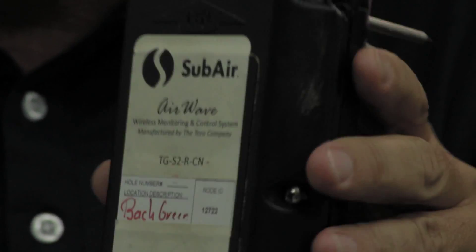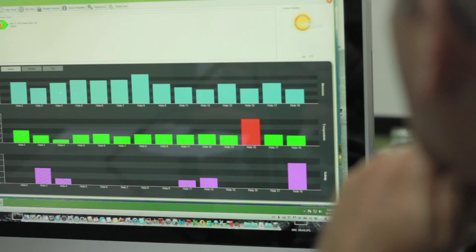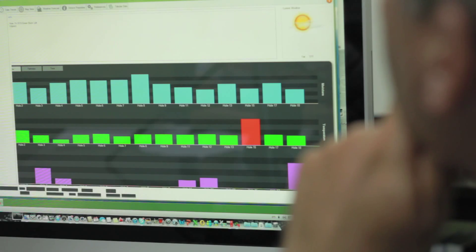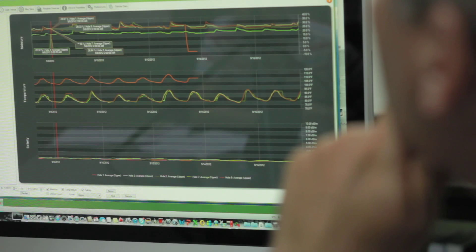These sensors give us some really good data and that data comes back through a web service that we can pull up from anywhere in the world, showing us the temperature and the moisture level as well as the salinity of the golf course.